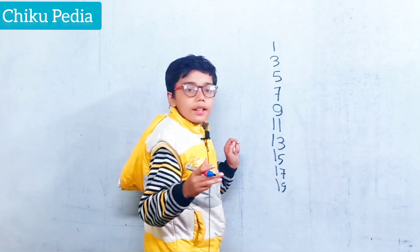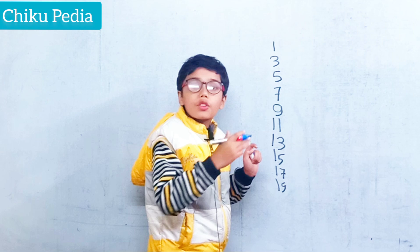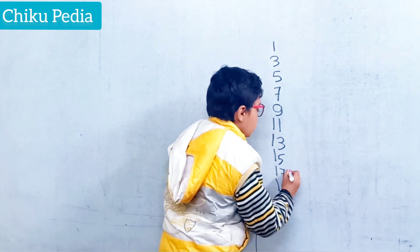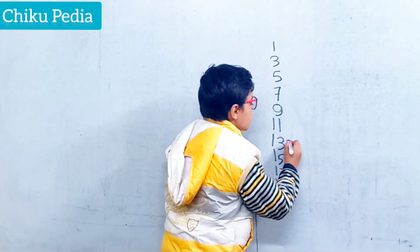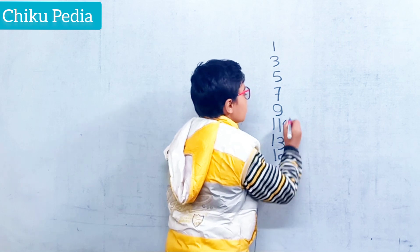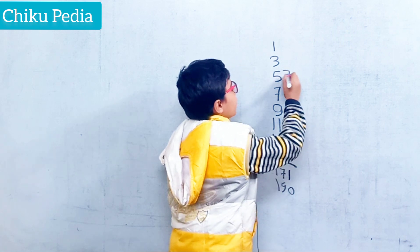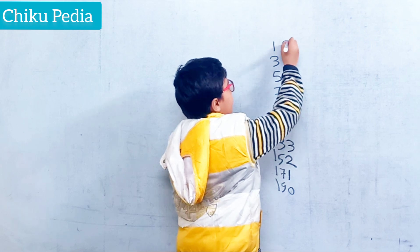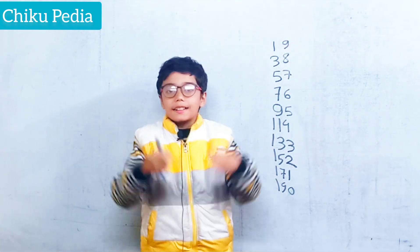Then we will start backward counting from the bottom: 0, 1, 2, 3, 4, 5, 6, 7, 8 and 9. So your table is ready.